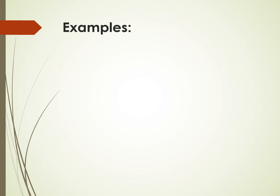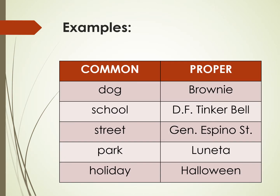Examples of common and proper nouns: here is a table showing five common nouns and five proper nouns as counterparts. The first one is dog — a proper noun for dog would be Brownie, German Shepherd, or Whitey. For school, a proper name would be D.F. Tinkerbell School, Fisher Valley College, or Taguig City University. For street, proper nouns are General Espino Street, Colonel Bravo Street, or General Ballester Street.